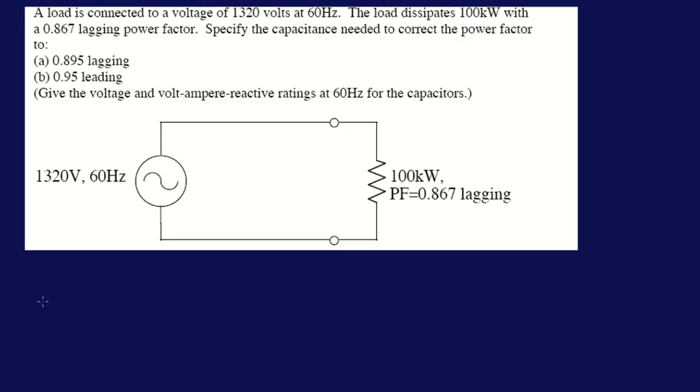Specify the capacitance needed to correct the power factor to A, 0.895 lagging, or B, 0.95 leading.